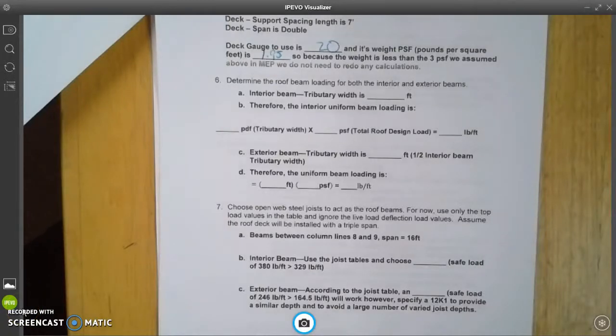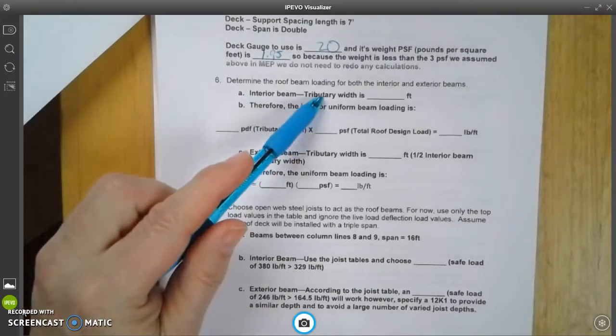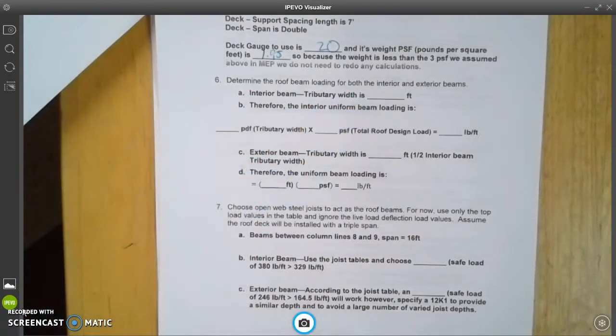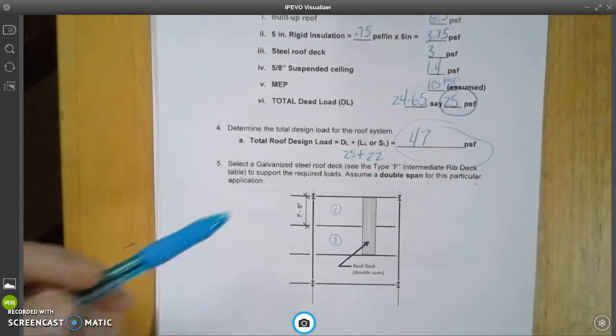Now we're going to do the tributary area for our package of 3.22 loads. Here we go. The interior beam tributary width is... and we'll go back to the picture down here and we'll look at this.